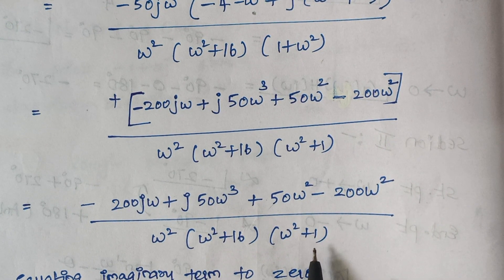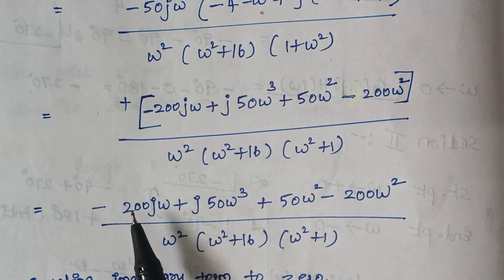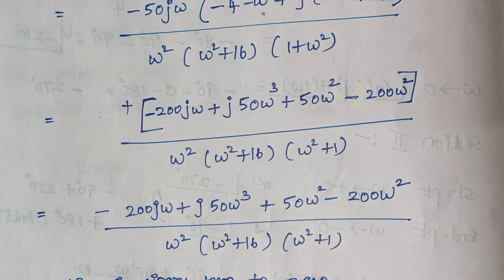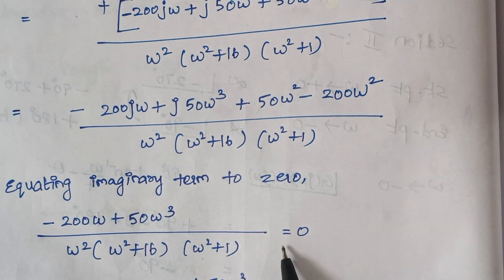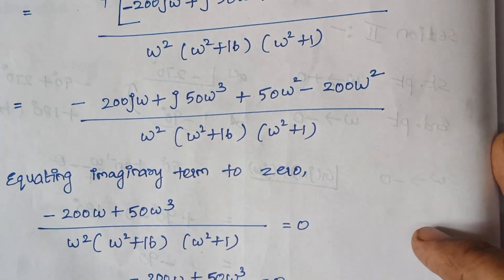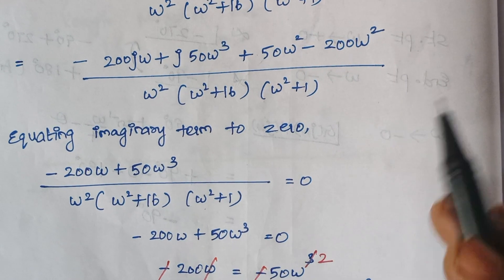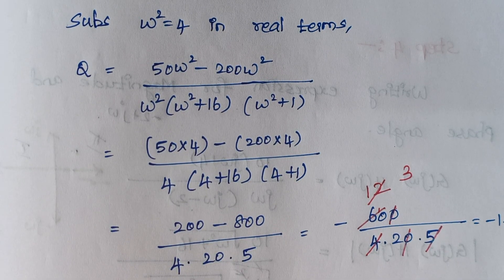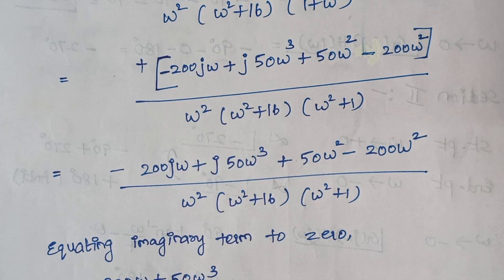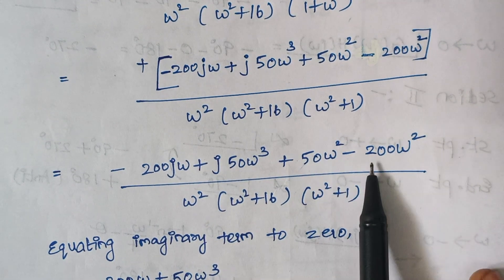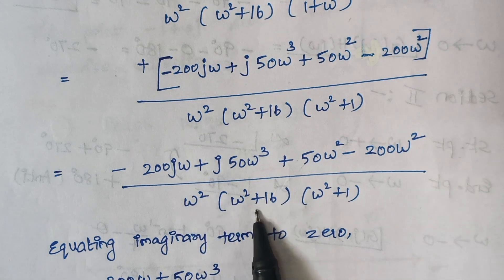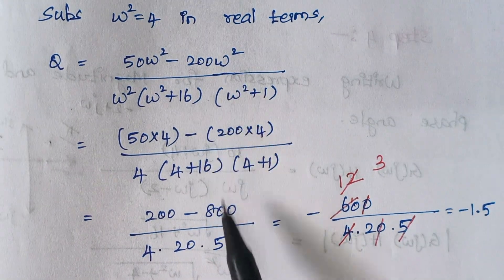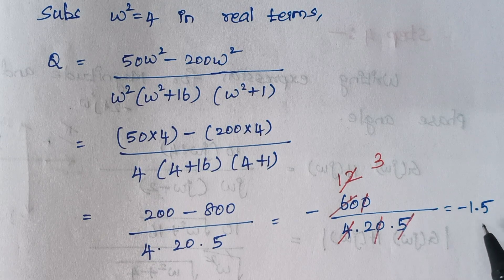Next we equate the imaginary terms to zero. Setting the imaginary part equal to zero and solving, we find ω² = 4, so ω = 2. Substituting ω² = 4 into the real term expression — which is (50ω² − 200ω²) divided by (ω² · (ω² + 16) · (ω² + 1)) — gives a QE value of −1.5. QE is the intersection of the Nyquist plot on the negative real axis.